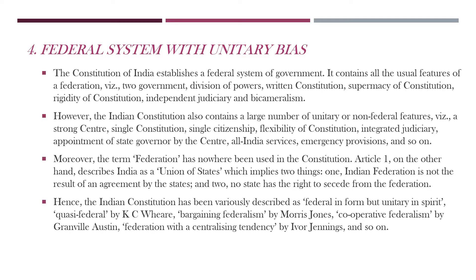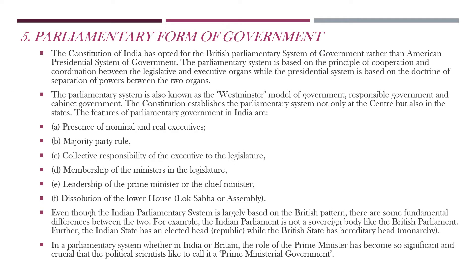Federal system with unitary bias. We have followed the federal form of government. It consists of two levels of government: one at the central level and one at the state level. Despite having a federal structure, the Constitution also maintains a unitary bias, giving significant powers to the central government.